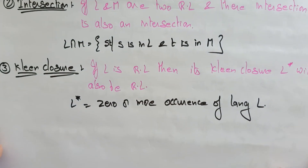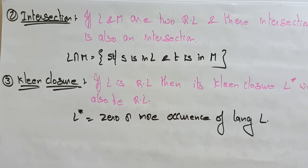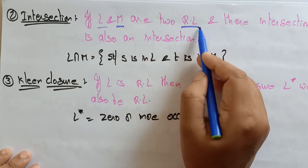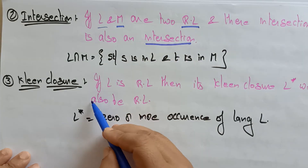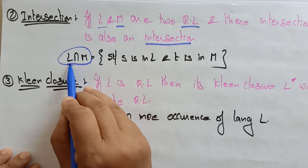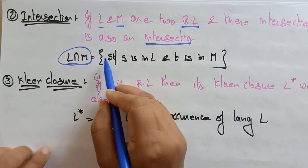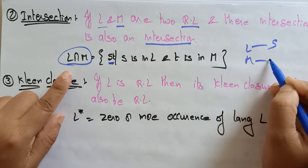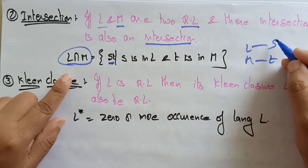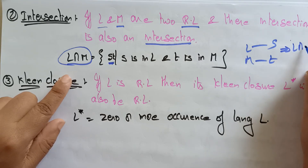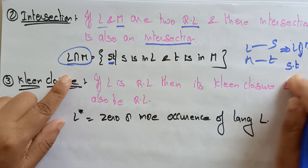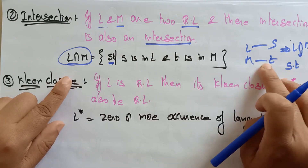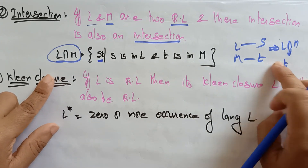The next operation is intersection. Suppose L and M are two regular languages. Their intersection, L ∩ M, involves strings where S is in L and T is in M, and it gives us the combination S·T where S is in L and T is in M.